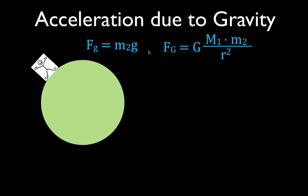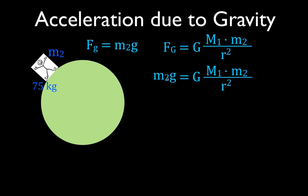That means these two equations are equal to each other, so I set M2·G equal to the law of universal gravitation. In this equation, M2 on the left and M2 on the right are the same — the mass of the person, 75 kilograms. We can cancel those two values out, and that leaves us with the equation to calculate the acceleration due to gravity: G equals the gravitational constant times M1, the mass of the planet, divided by the square of the distance between the two objects.